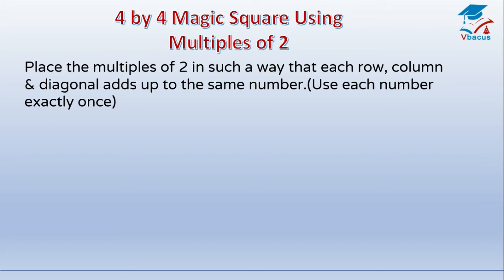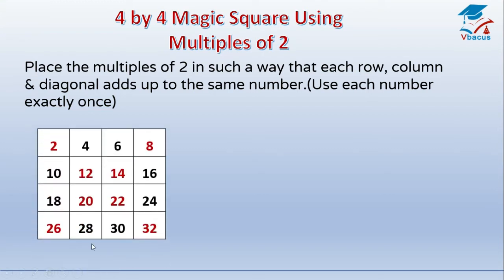4 by 4 magic square using multiples of 2. Place the multiples of 2 in such a way that each row, column, and diagonal adds up to the same number — use each number exactly once. In row 1: 2, 4, 6, 8; row 2: 10, 12, 14, 16; row 3: 18, 20, 22, 24; and row 4: 26, 28, 30, 32. Here also I have exchanged the numbers.